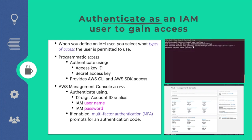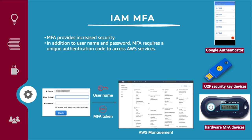AWS services and resources can be accessed using the management console, CLI, or SDK. To add an extra layer of security, it is recommended to enable multi-factor authentication (MFA). When MFA is enabled, the user provides an MFA token obtained from a software authenticator like Google Authenticator, a U2F security key, or a hardware MFA device. To assign permissions to a user, group, or role, you must create an IAM policy. By default, there are no permissions — all actions are denied by default (implicit deny). Any actions you do not explicitly allow are denied, and any actions explicitly denied are always denied.